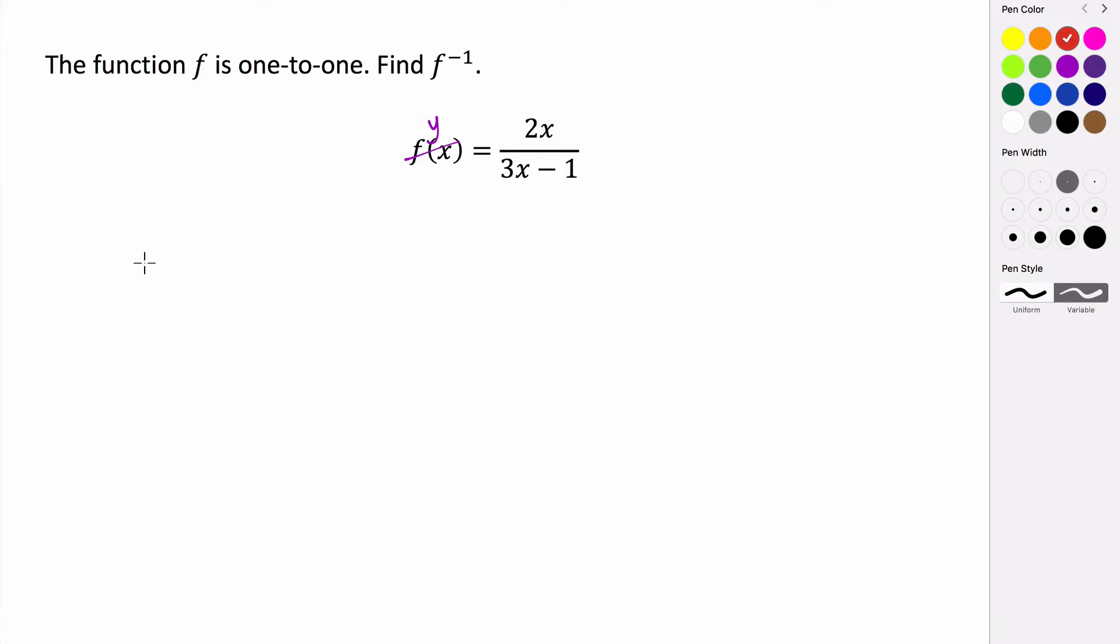So we have x equals 2y divided by 3y minus 1. To solve this for y, we don't want to have any y's in our denominator, so we're going to get rid of the denominator by multiplying by it.